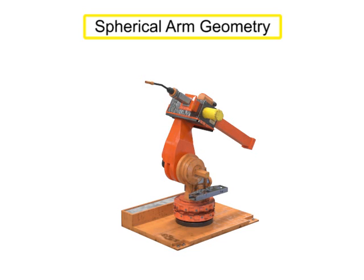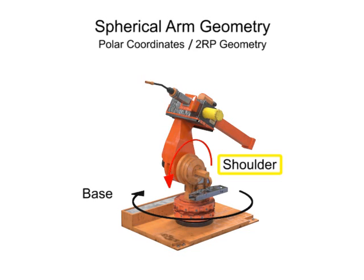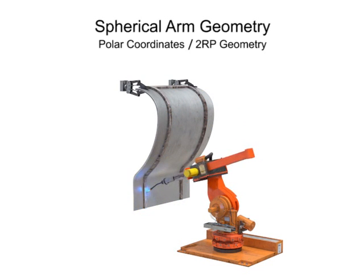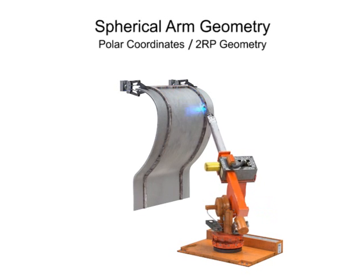Spherical arm geometry robots can rotate in two directions and move linearly in one, and are thus given the designation of R2RP. The robot has base rotation, shoulder rotation, and prismatic or linear motion at the arm. This type of robotic arm is most often used in machine-tending, material handling, welding, painting, coating, and assembly tasks.